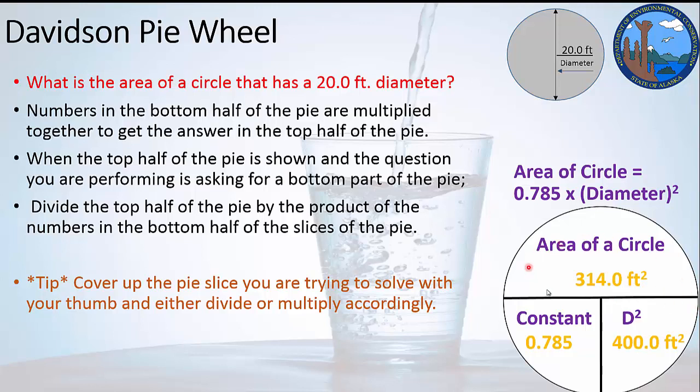So 20 squared is 400 feet squared times 0.785 is going to give us 314.0 foot squared. So that tip to cover up the pie slice you're trying to solve with your thumb and either divide or multiply accordingly. In this situation, we covered up this area of a circle space because we wanted to multiply these two together. In the previous slide, we covered up this space and we divided the area of the rectangle by the given.